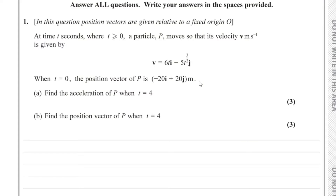Question 1. In this question position vectors are given relative to a fixed origin O. At time t seconds where t is greater than or equal to zero, a particle P moves so that its velocity v metres per second is given by v equals 6t in the i component and minus 5t to the power of 3 over 2 in the j component. When t equals 0, the position vector of P is minus 20i plus 20j metres. For part a, find the acceleration of P when t equals 4.